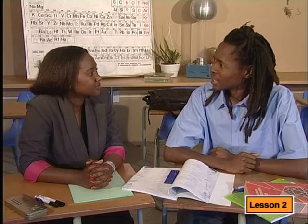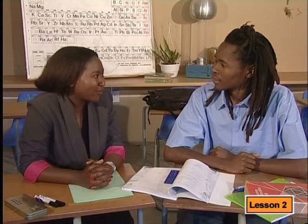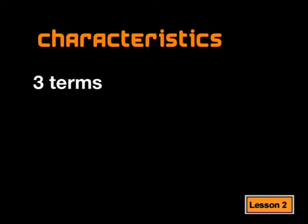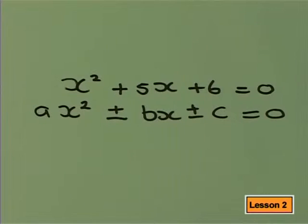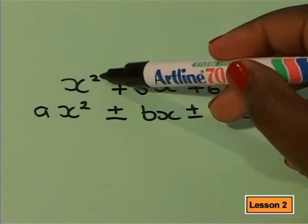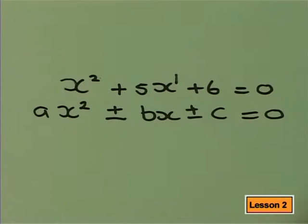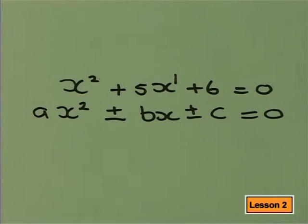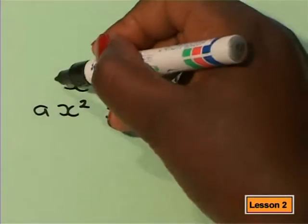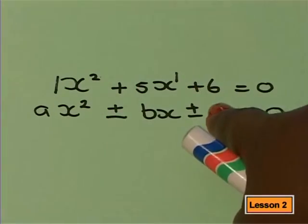How do you know it is a quadratic equation? You just need to know what characteristics to look for. Firstly, quadratic equations always have three terms, and the equation is in the form of ax squared plus or minus bx plus or minus c equal to zero. In this example, we can clearly see that there are three terms. This x is to the power of two and this one to the power of one, so the powers are in the ratio of two to one. The equation is in the form ax squared plus bx plus c equal to zero. We can also see in this case that a equals one, b equals five, and c equals six.